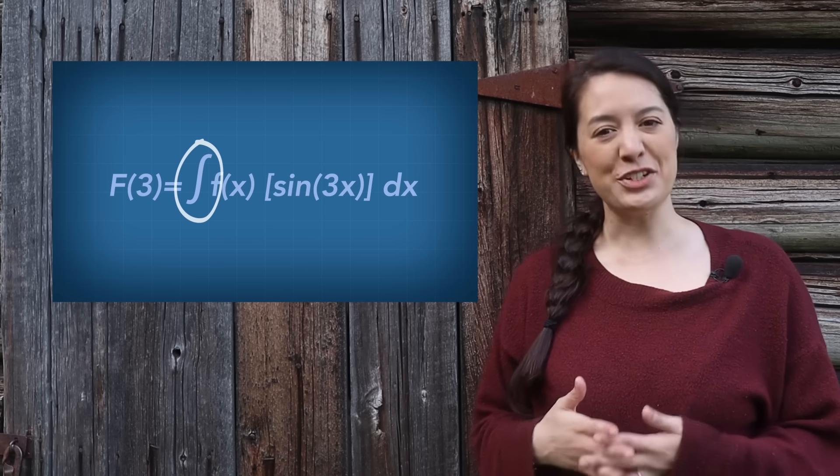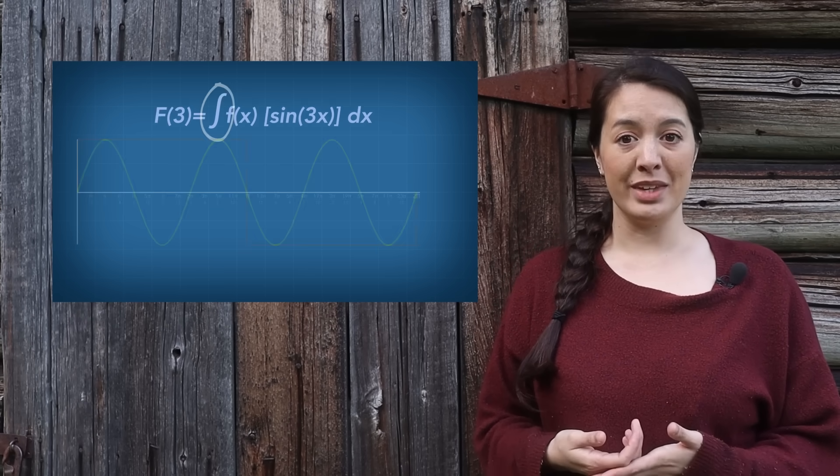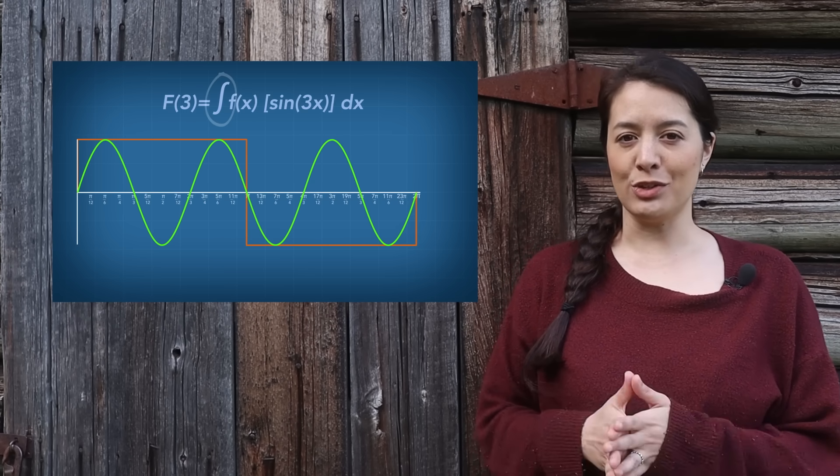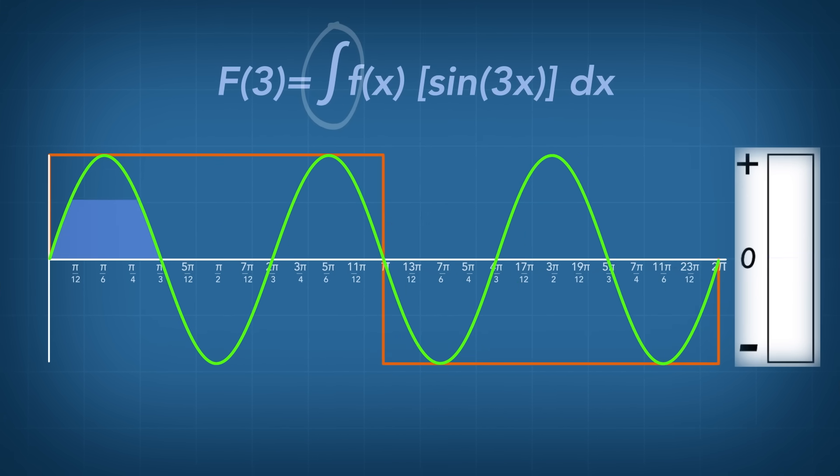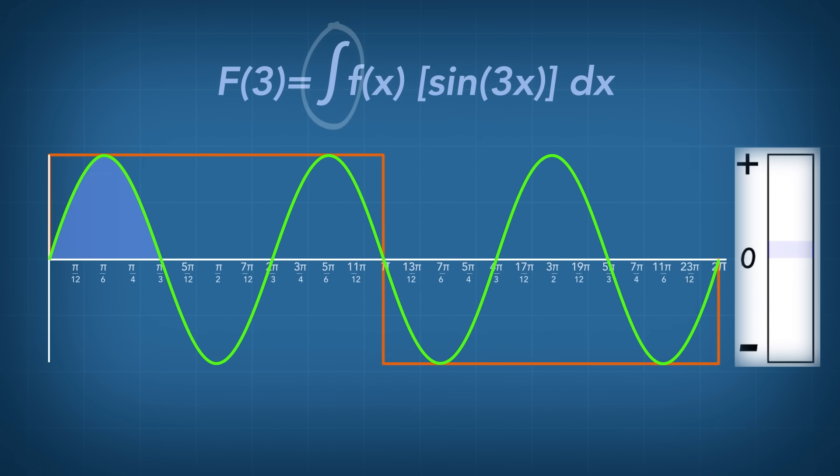Now we come to the integral, which is the continuous version of a sum. The sum of all of these values will tell us whether this sine wave is necessary to build the square wave. If the sum is positive, the waves are overall correlated, and this sine wave is in the Fourier series of this square wave.